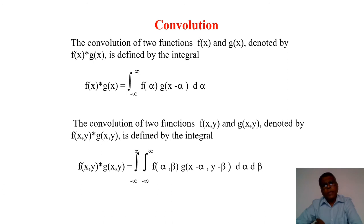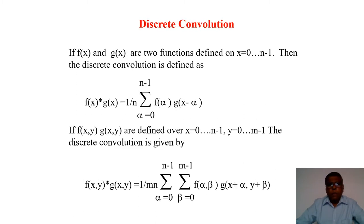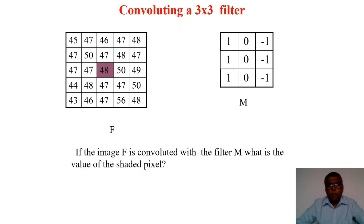Convolution is defined between two functions — in the continuous case as an integral, and in the two-dimensional case as a double integral. But images are discrete functions with integer pixel values, so instead of integrating we do summation. For example, to convolve an image with a filter, we place the center of the filter on top of a pixel, multiply the values, and add them all together — giving the filtered value for that pixel. This must be done for every pixel to get the filtered image.